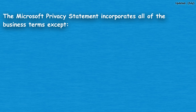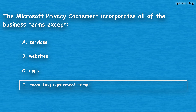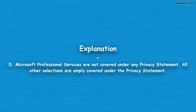The next question: the Microsoft privacy statement incorporates all of the business terms except which? Option A: services. Option B: websites. Option C: apps. Option D: consulting agreement terms. The correct answer is option D, consulting agreement terms. Microsoft professional services are not covered under any privacy statement. All other selections are amply covered under the privacy statement.